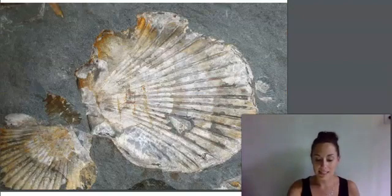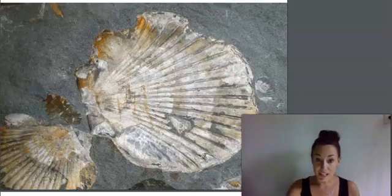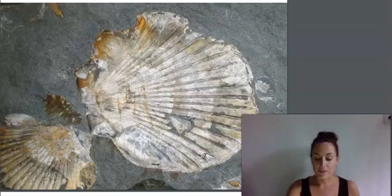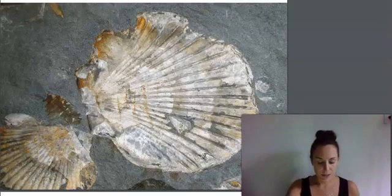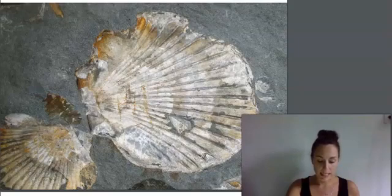Paleontologists need to know a lot about rocks and geology in order to study living things, because of something called a fossil. A fossil is the preserved body or imprint of a plant or animal that lived thousands, millions, or even billions of years ago. Most fossils, like this fossil of a seashell, show you where the body of an animal or plant died and was buried under layer after layer of sediment.